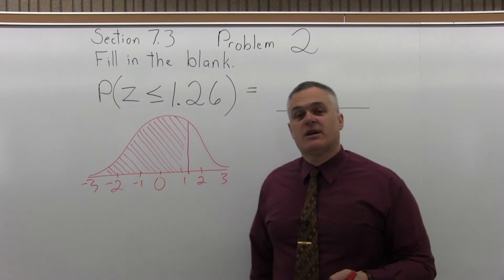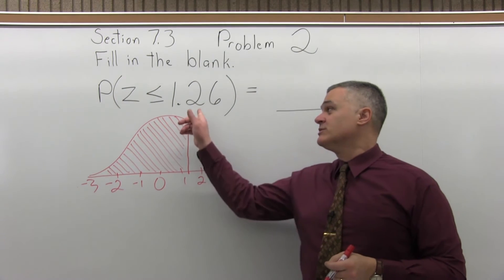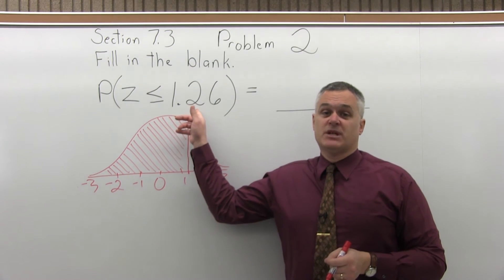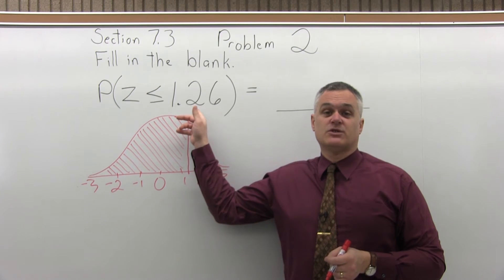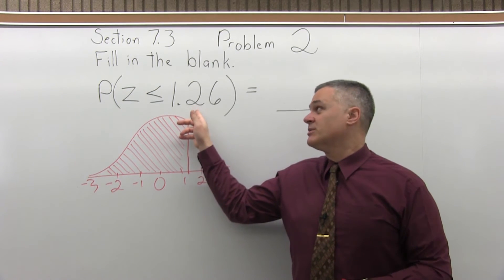So we need to look that up in that standard normal chart. We need to look up 1.26. The first step is to write the 1.26 so that it has two places after the decimal, which it already has. There's no work to be done there.